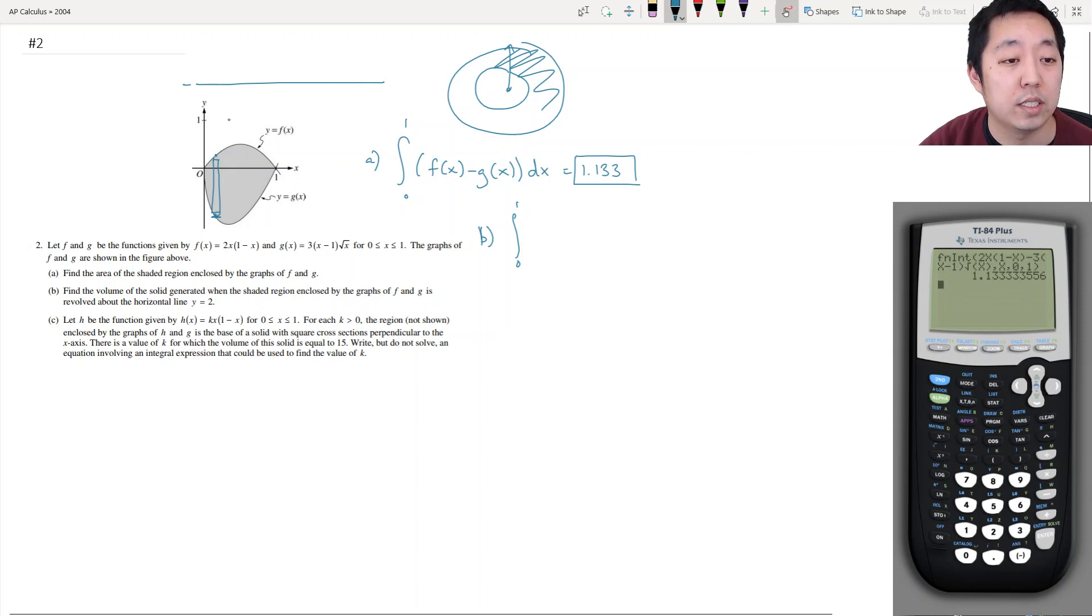So that distance is going to be 2. When you do the distance, the height distance, you're basically saying it's the top value 2 minus the bottom value. So this distance here is going to be 2 minus g of x. And then the inside radius is going to be the distance to f, and that's going to be 2 minus f of x.